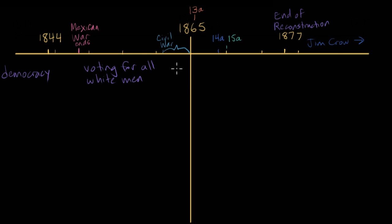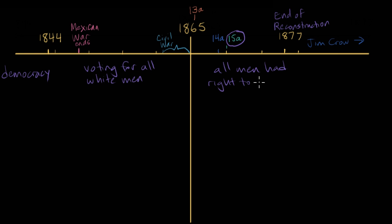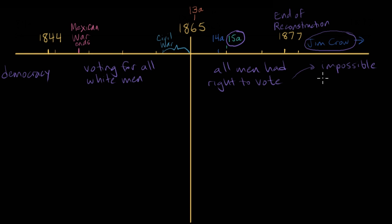How about after the Civil War? The biggest change was the ratification of the 15th Amendment in 1870, which granted all men the right to vote, enfranchising African American men. It did not, to the disappointment of the women's suffrage movement, enfranchise women. But by 1877, the end of Reconstruction, when the federal government stopped enforcing the rights of black citizens in the South, Jim Crow laws would make voting all but impossible for black men.